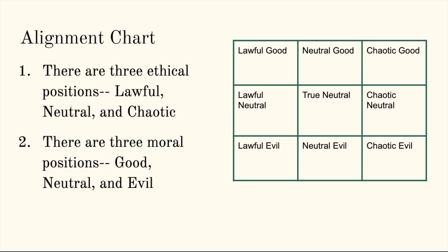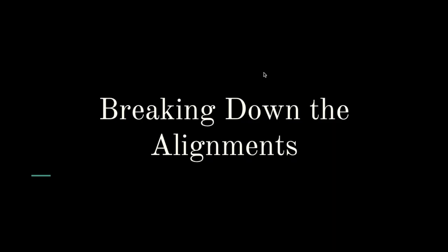An alignment chart. In D&D, there are nine alignments. There are three ethical positions — lawful, neutral, and chaotic — and there are three moral positions — good, neutral, and evil. The alignment chart is different combinations of these three ethical positions and three moral positions. So let's break them down.